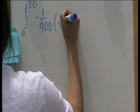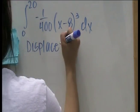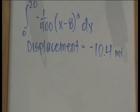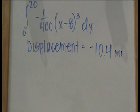For the biker's displacement, you take the integral from 0 to 20 again, but without the absolute value, because you are solving for the final position in relation to the starting point. The displacement is negative 10.4 miles, which means that the biker ends up 10.4 miles behind the starting point.